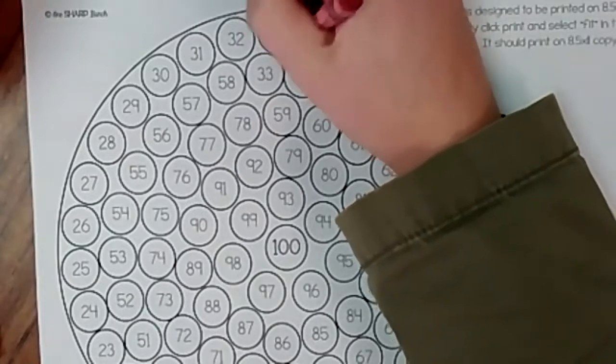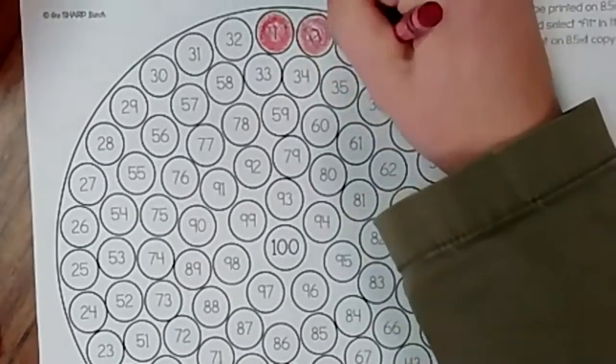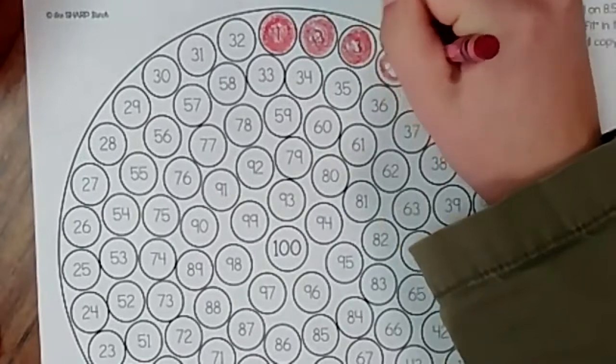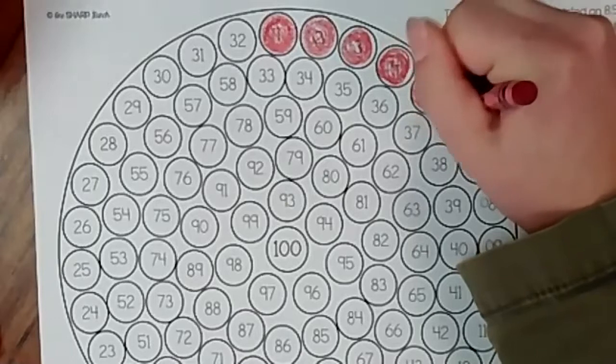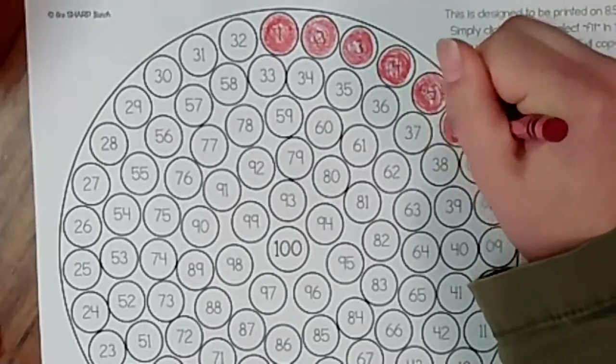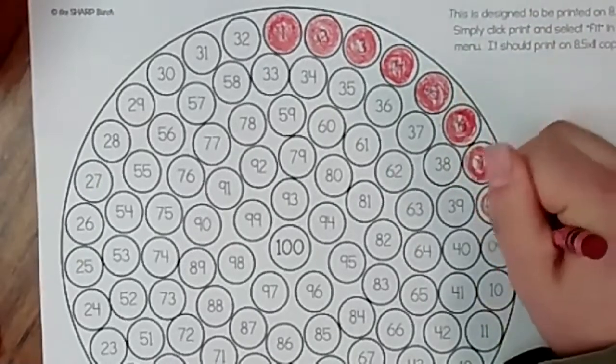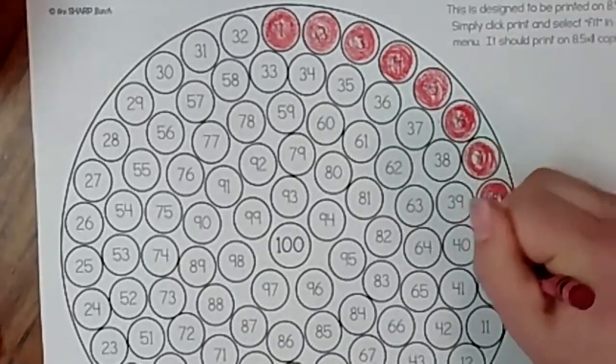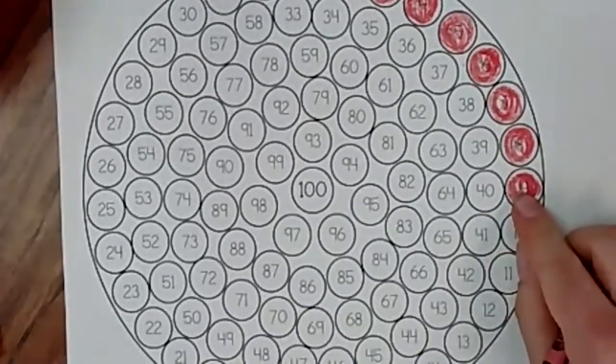Now I might be going a little fast. So again, if I color way faster than you, you can hit pause and come back. Feel free to hit pause if I'm going faster. Also feel free to count. So I'm at six, seven, eight, nine. And I'm going to stop at nine because then it changes.